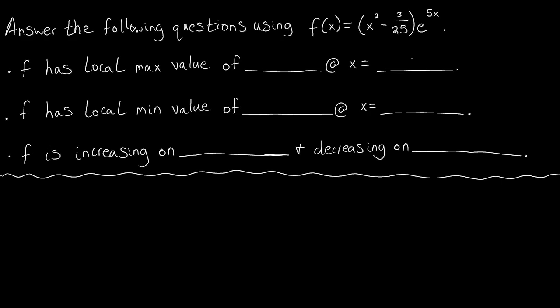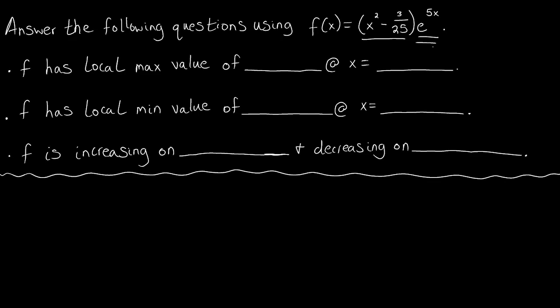In order to find the critical points, we've got to find where the derivative equals zero or is undefined. So let's take the derivative. We see that we have a function multiplied by another function, and the rule we use when we have two functions multiplied by each other is the product rule. So let's call this function g and this function h.